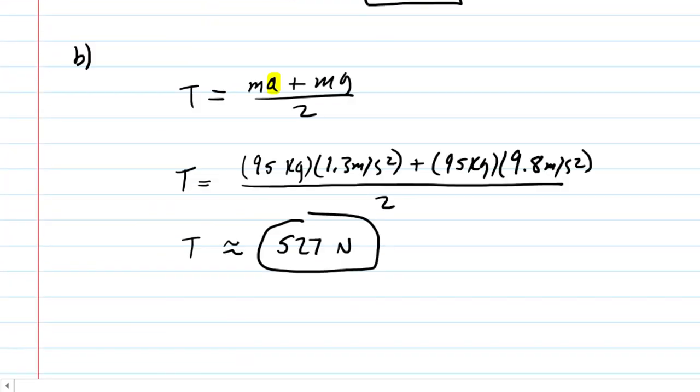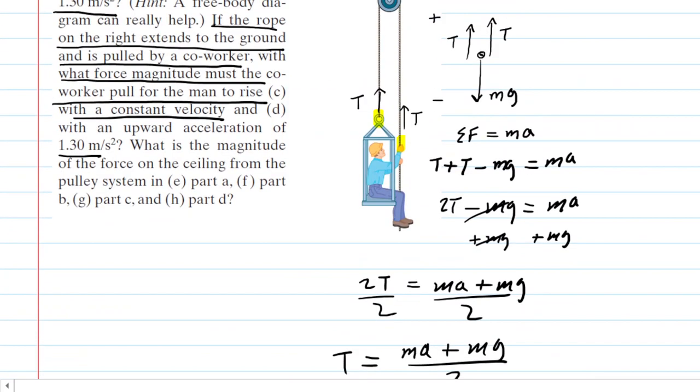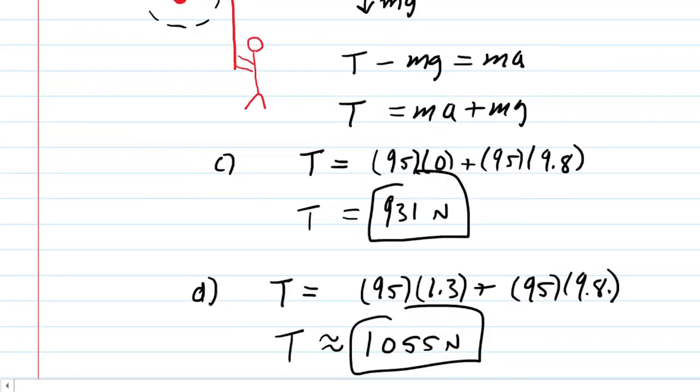Now we go back up here, and we can see the question asking us, what is the magnitude of the force on the ceiling from the pulley system in part A, in part B, part C, and part D. The lettering there was a little confusing, wasn't it? So let's take a look at what's going on over at the ceiling.